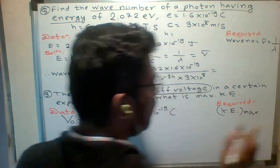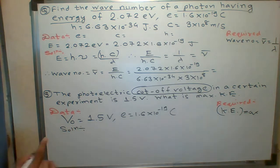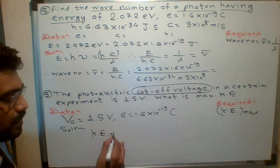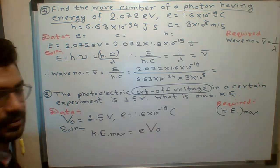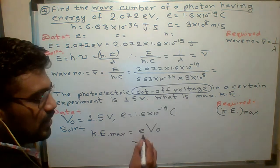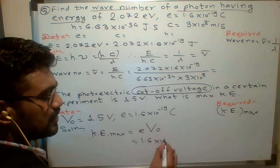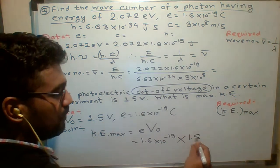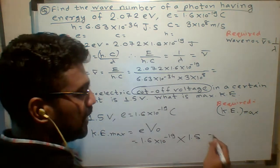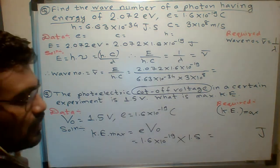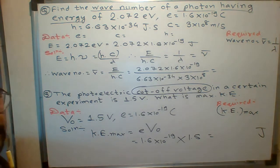One formula to remember: maximum kinetic energy is given by KE_max = e × V₀. So it is 1.6 × 10⁻¹⁹ multiplied by V₀ = 1.5. Find the answer — it will come in joules. No need to convert to electron volt; the answer in joules is fine.